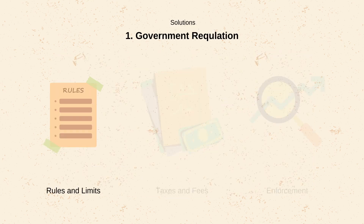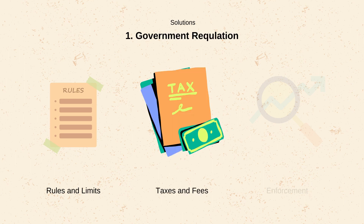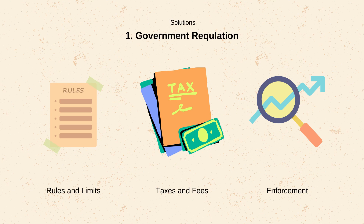Government regulation. Rules and limits: we can set some quotas, limits on use, or create restricted zones — like fishing quotas, pollution caps, protected areas, and so on. Taxes or fees: imposing taxes or fees on the use of resources to discourage overuse and raise funds for its management. Enforcement: adequate monitoring and enforcement of regulations with penalties for those acting against the common good.